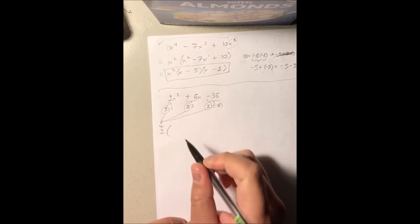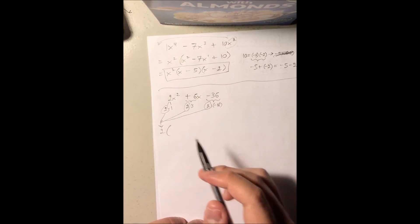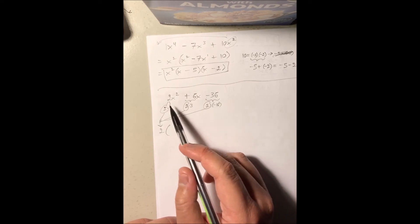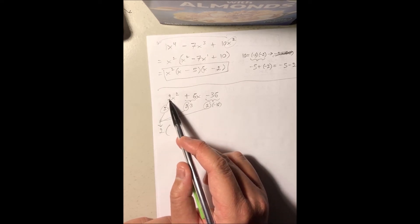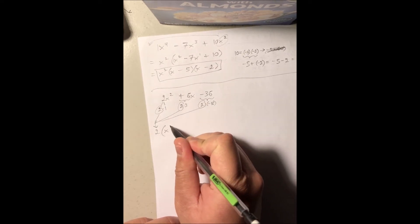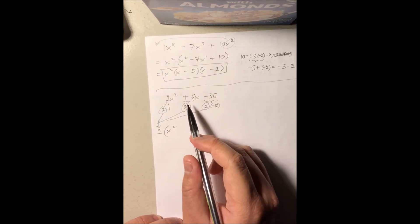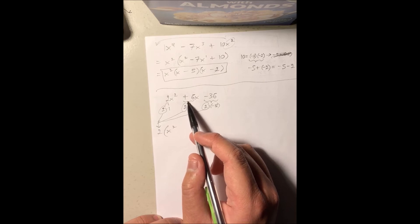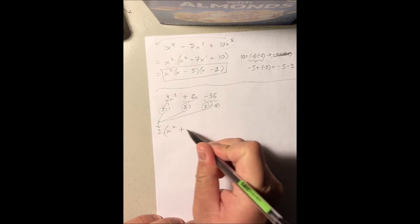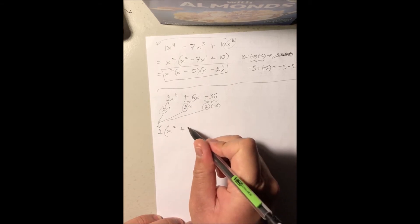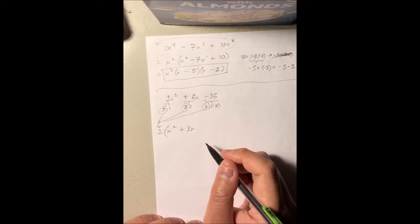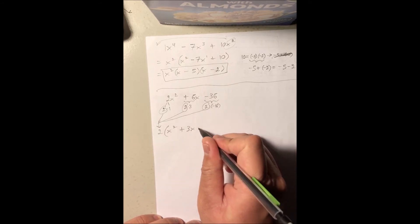After factoring out the 2 from 2x squared, we're left with x squared. After factoring out the 2 from 6x, we're left with plus 3x. And here, we're left with minus 18.